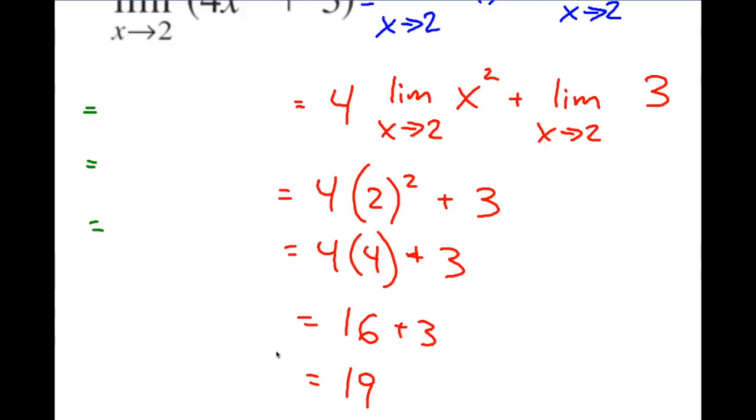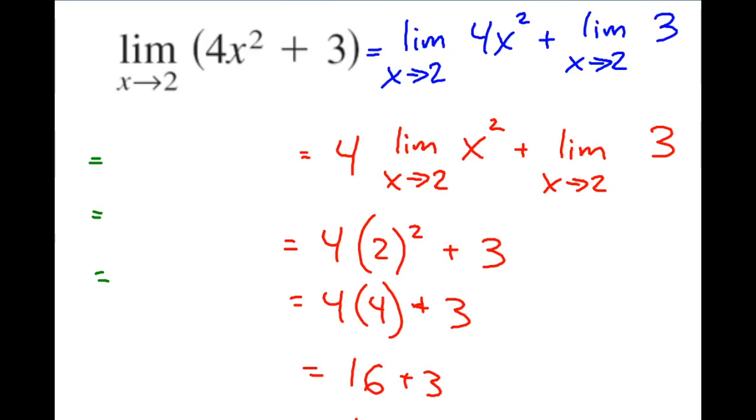Now of course what you can get is, even though we did it that method and used the properties of limits, we could have easily also done direct substitution. So if you're given something like this, if you can use direct substitution, do it, we can just plug the 2 in, 2², obviously it's going to give us 4, 4 times 4 is 16. So we're going to end up getting the same thing. Sometimes it's very important to know these properties and be able to use them because we can't always use direct substitution very easily in our nice little polynomial here.